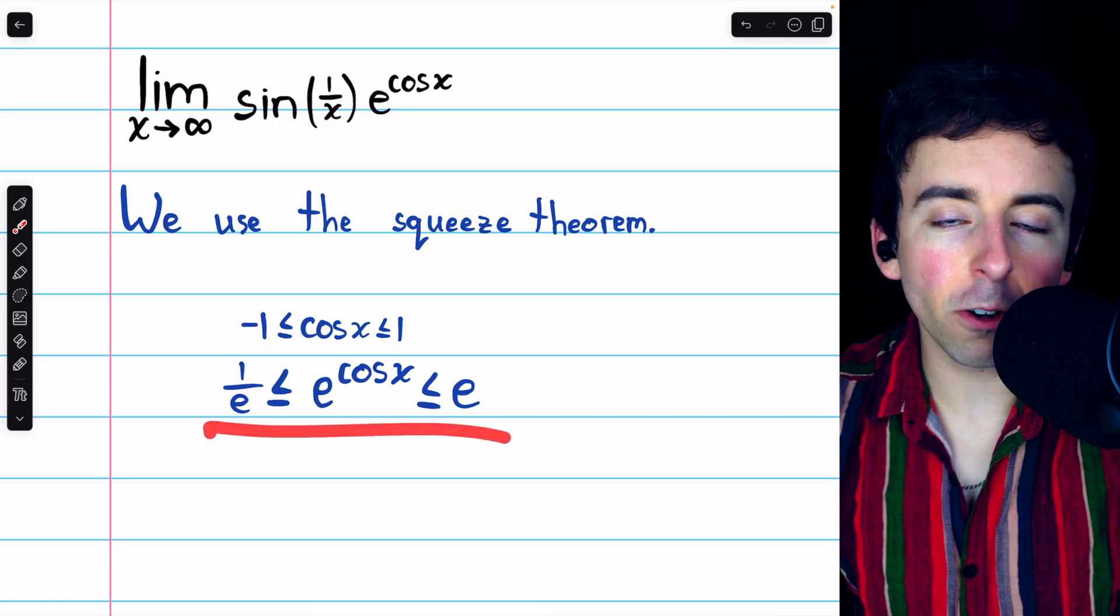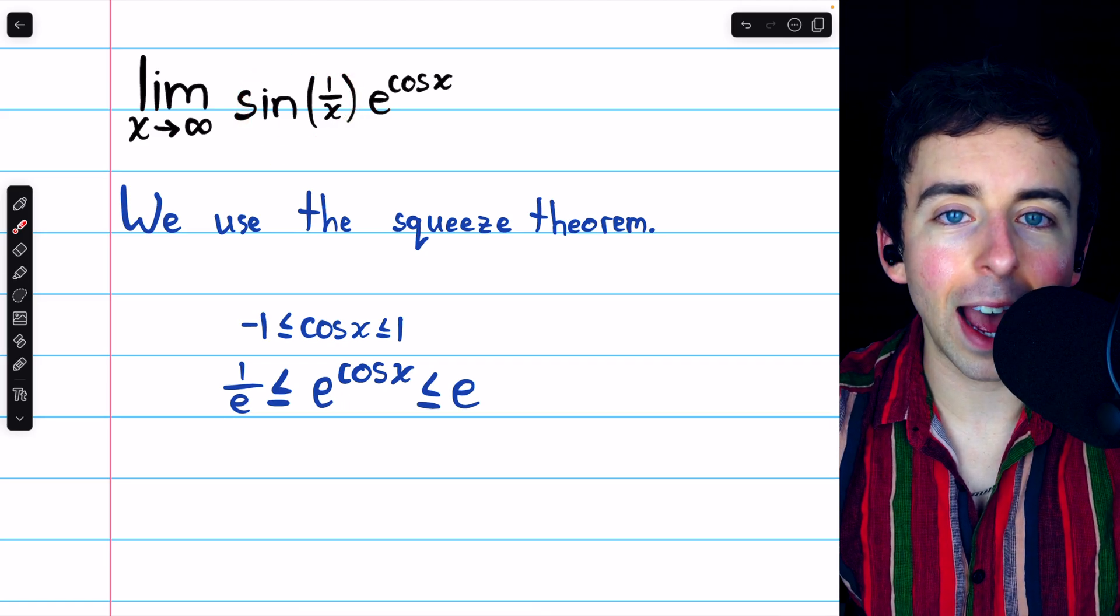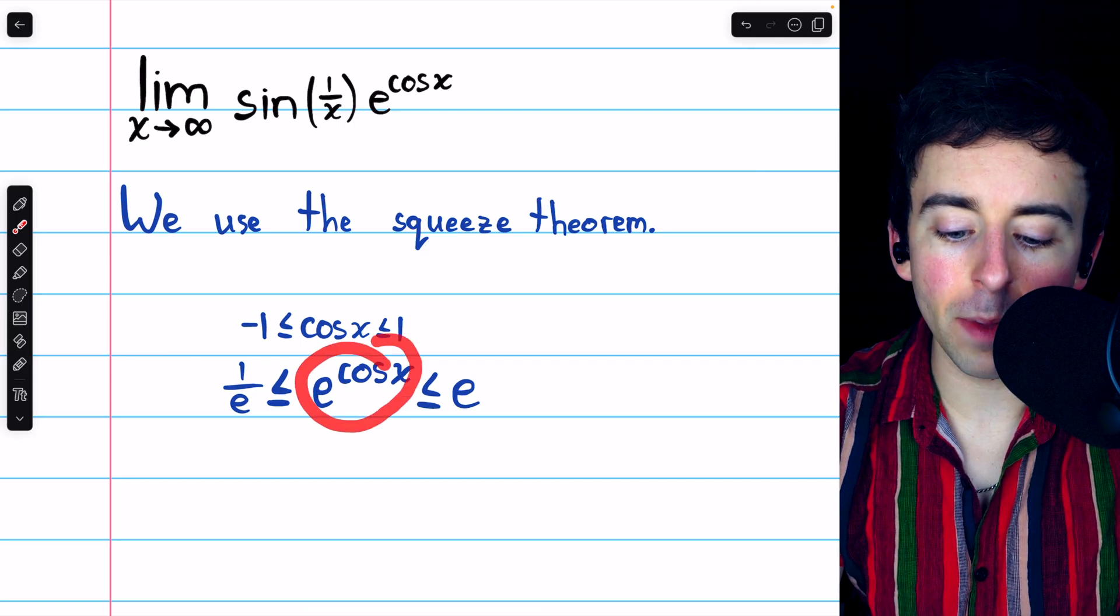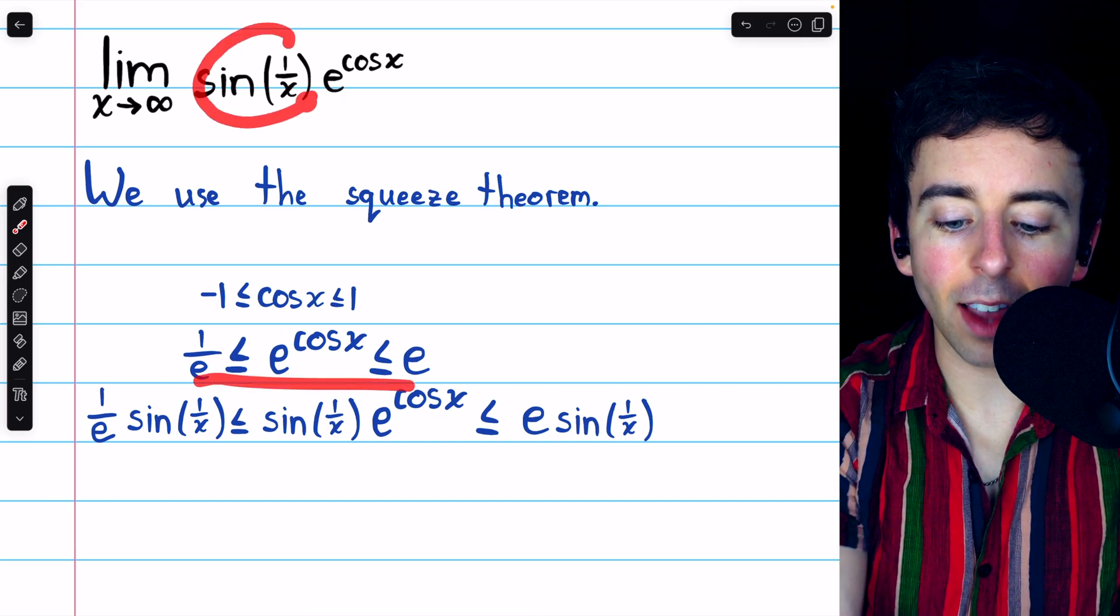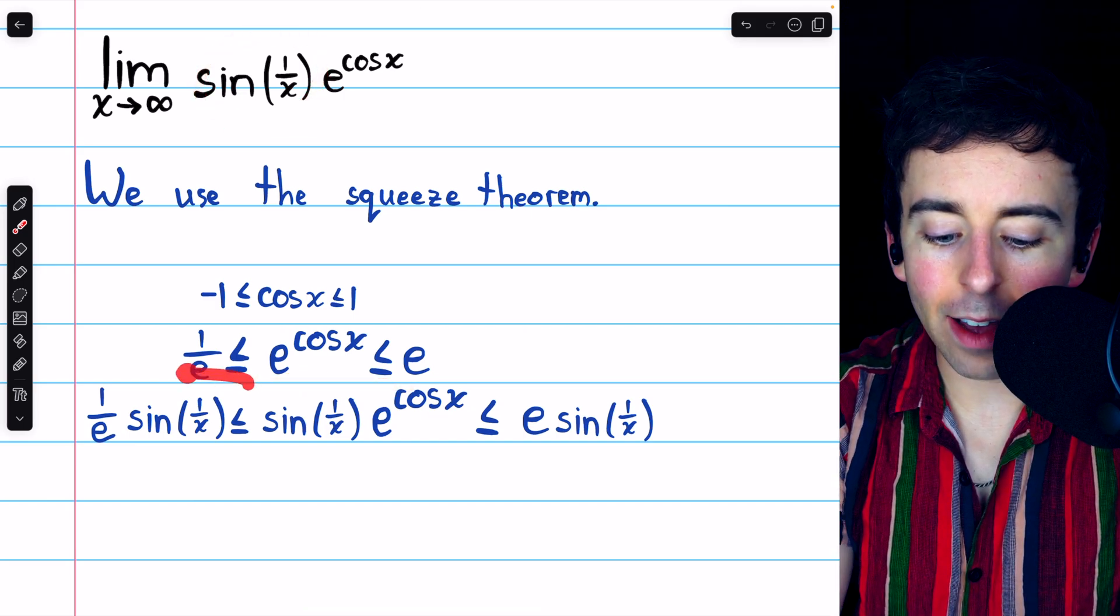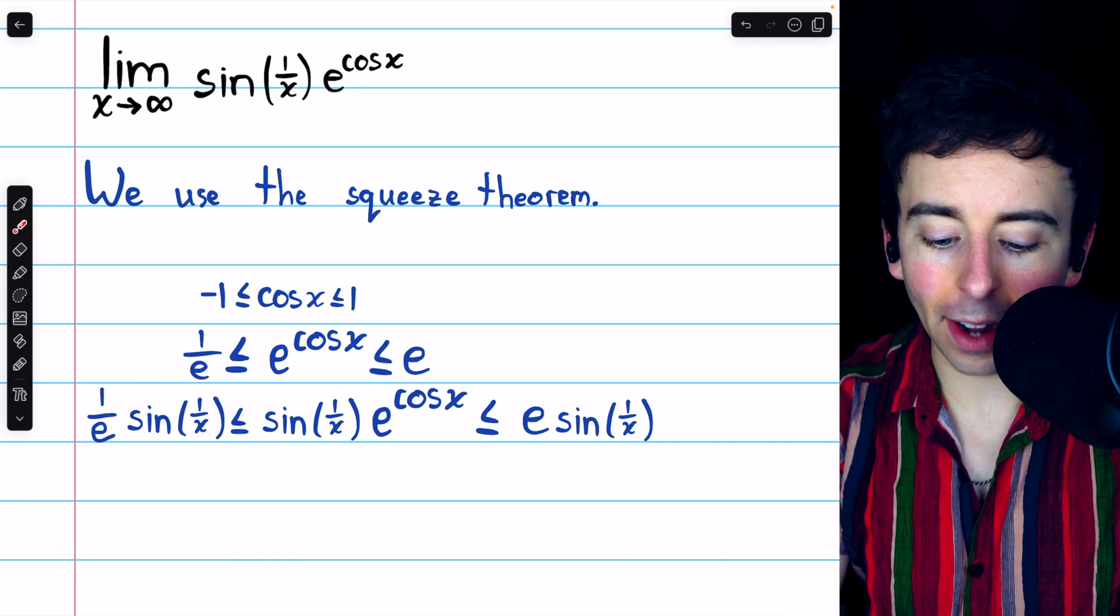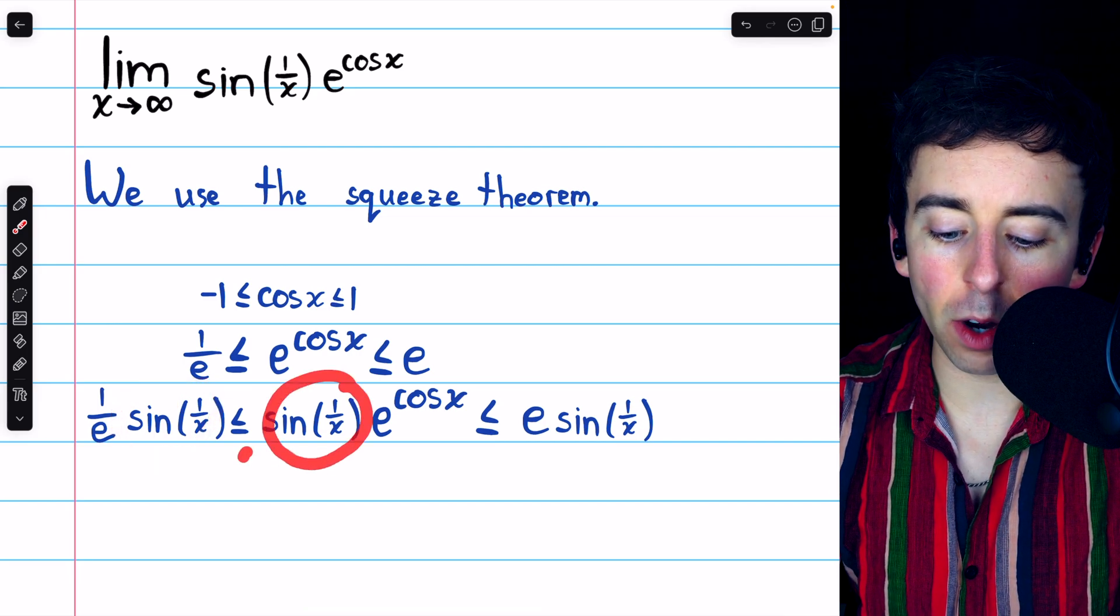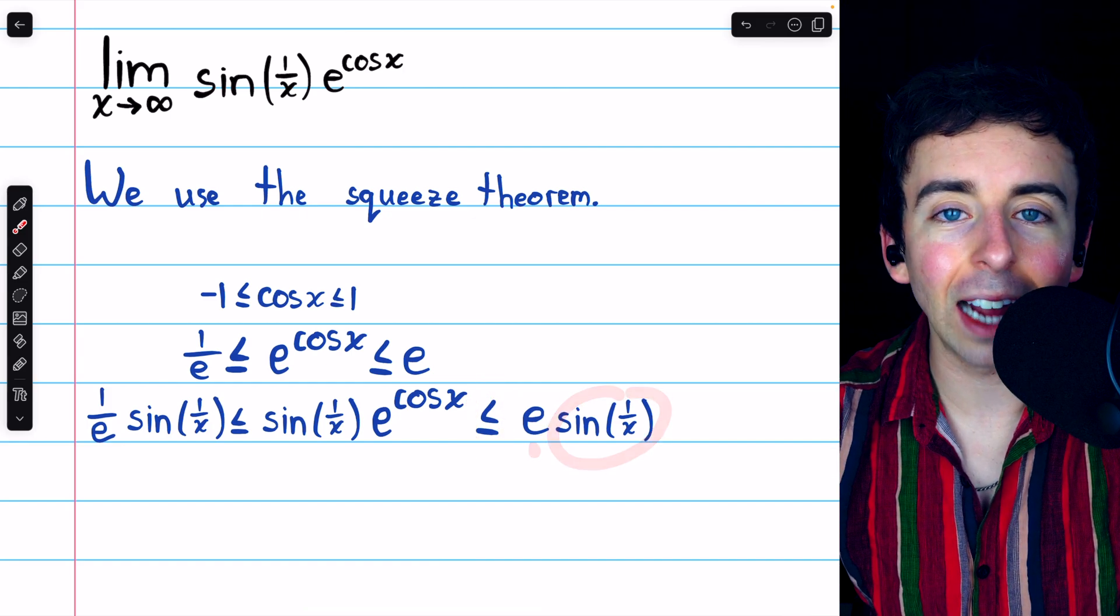So now, we'll multiply across this whole inequality by sine of 1 over x. That way, the expression in the middle will match the expression we actually want. After multiplying everything by sine of 1 over x, we have this inequality: 1 over e times sine of 1 over x is less than or equal to sine of 1 over x times e to the cosine x is less than or equal to e times sine of 1 over x.